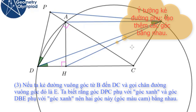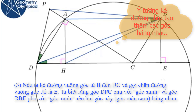If I draw a perpendicular line from B to line DC and name the point of intersection E, I know that this angle is 90 degrees minus this angle, and also this angle is 90 degrees minus this angle. So these two angles are equal, which I showed with an orange mark.